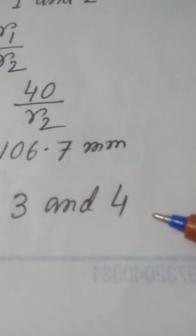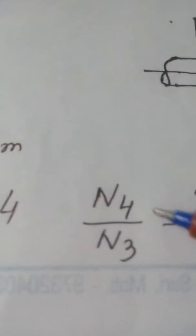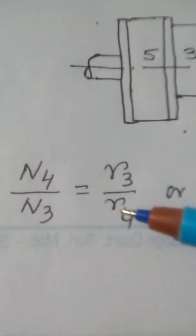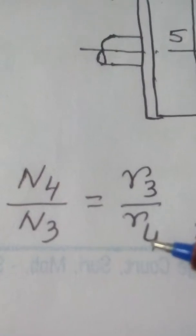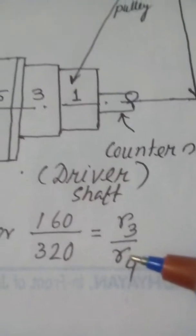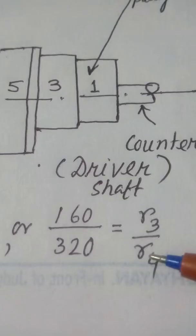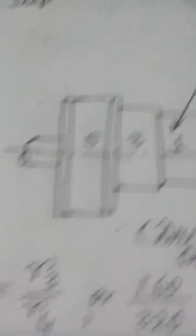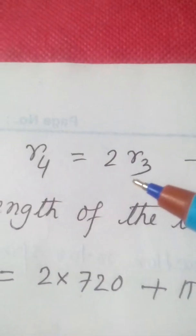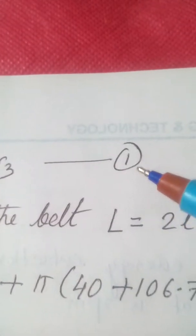For pulleys 3 and 4, the same speed ratio equation applies with suffix changes: N4/N3 = R3/R4. Substituting the known values gives us Equation 1: R4 = 2R3.